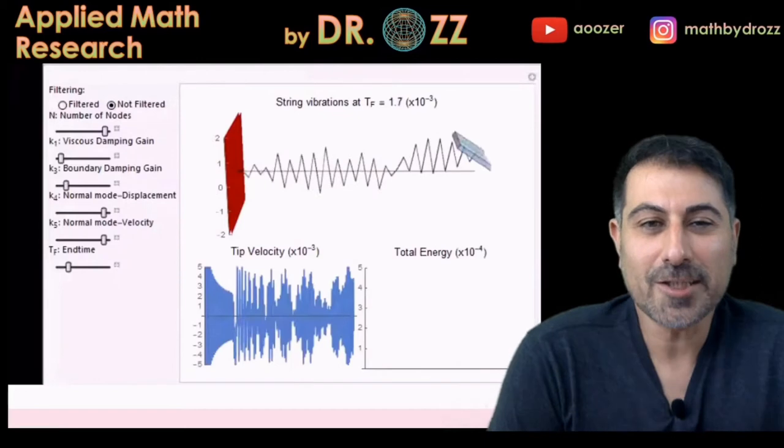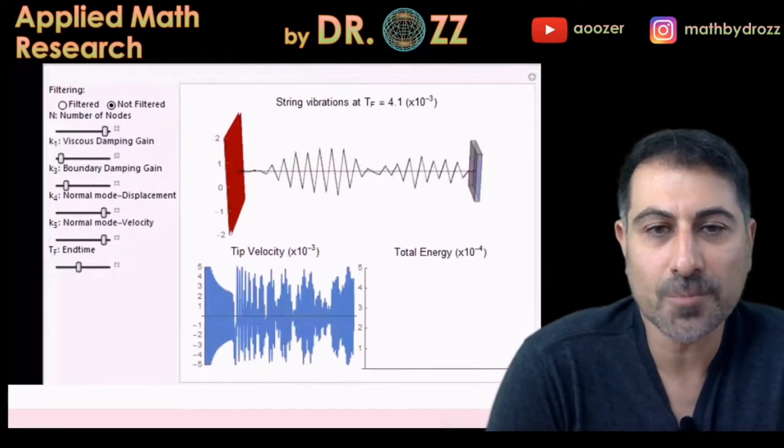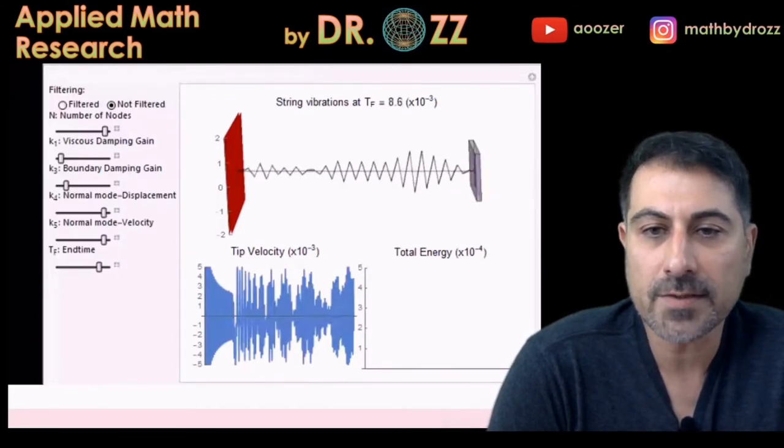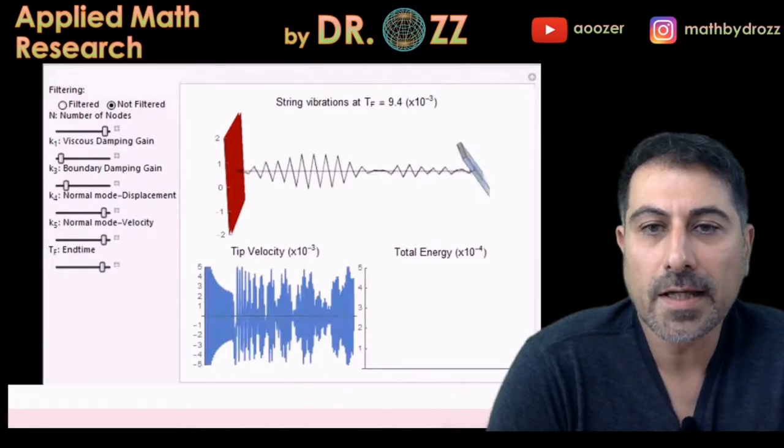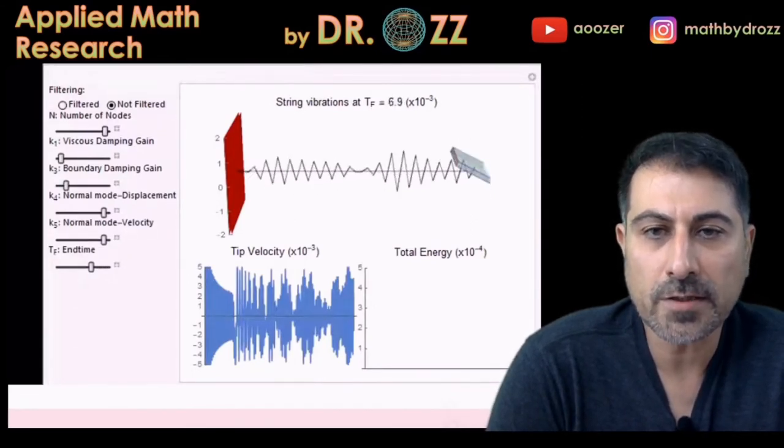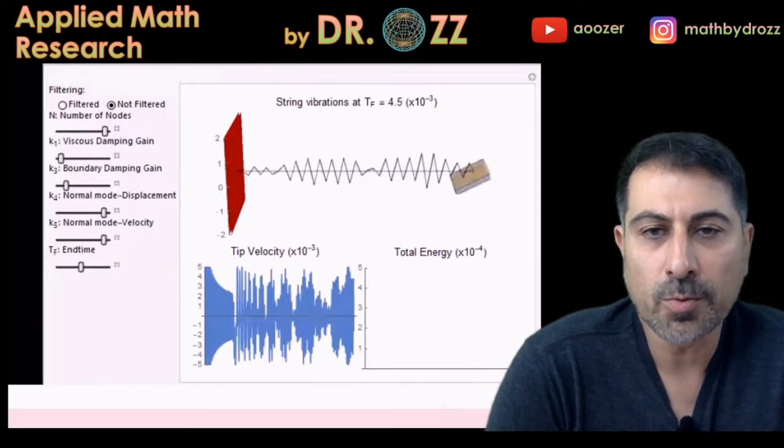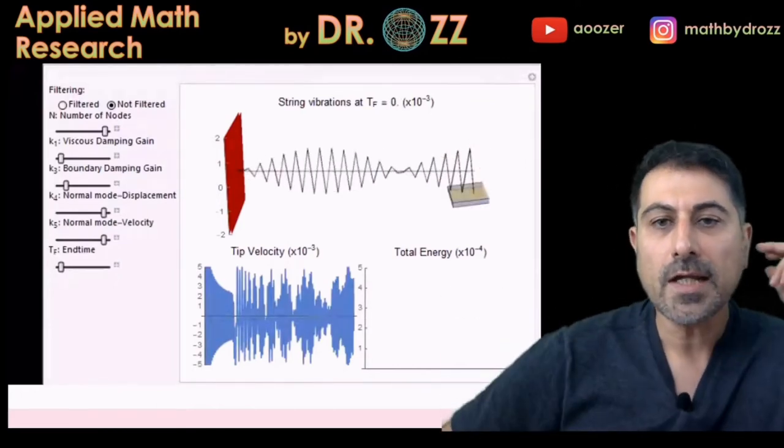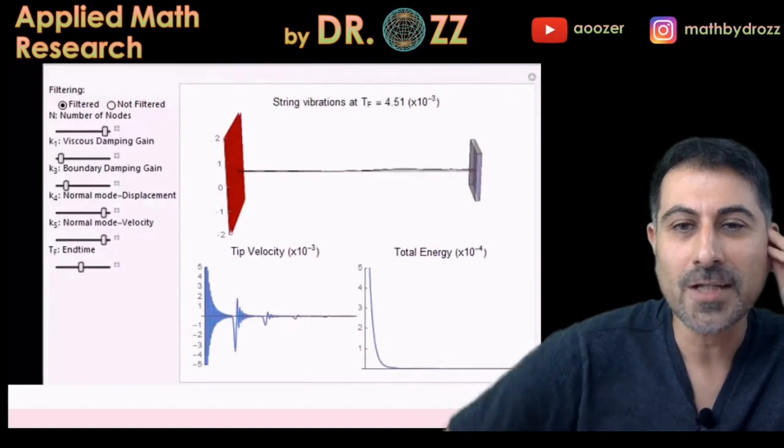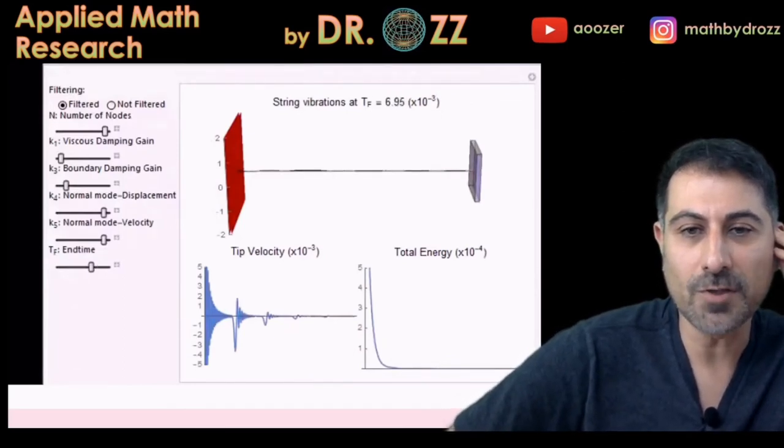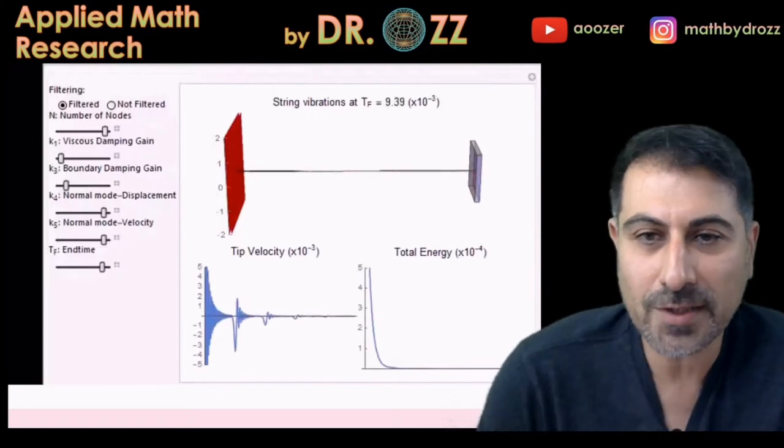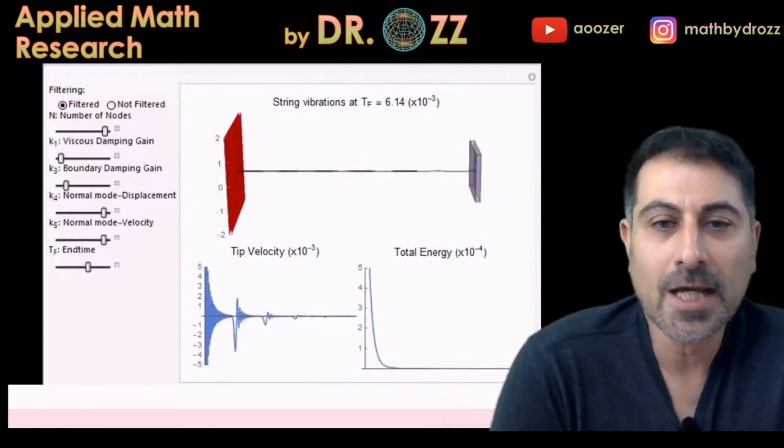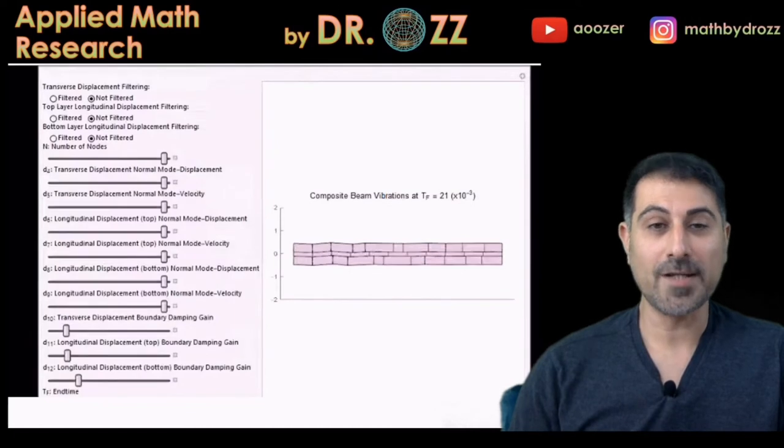All right, here is the Wolfram's demonstration project that several students worked on last semester. So we have the waves traveling. As you see that TF tells us the evolution of those waves in time. And we have filtered and non-filtered numerical approximation. And in the non-filtered case, there is no suppression of vibrations. We have two controllers, as I said, the viscous damping gain, which is a distributed damping, and the boundary damping. Right now you see the filtered version of the numerical approximation. As the time evolves, you see how fast the waves are suppressed by the controllers k1 and k3, even if you start with high frequency vibrational modes.